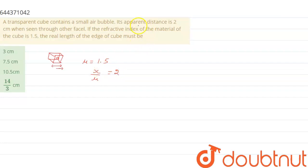And we have given the apparent distance, that is, equal to 2 cm, right? Refractive index is given 1.5.